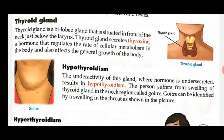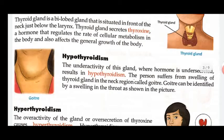The function of the thyroid gland is to produce the hormone thyroxine, which regulates the rate of cellular metabolism in the body. Thyroxine also affects the general growth of the body.